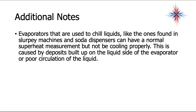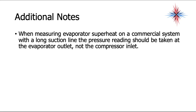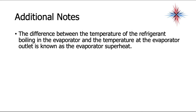System superheat is an additional measurement you'll come across occasionally. It is the difference between the refrigerant boiling temperature in the evaporator and the temperature of the suction line at the condenser, right before it goes into the compressor — taking the entire length of the suction line into account. This is actually what you're most often going to use when doing inspections and checks on split systems and package units.